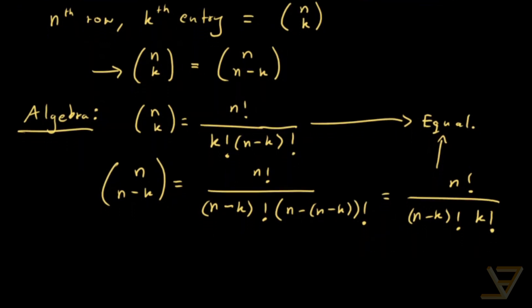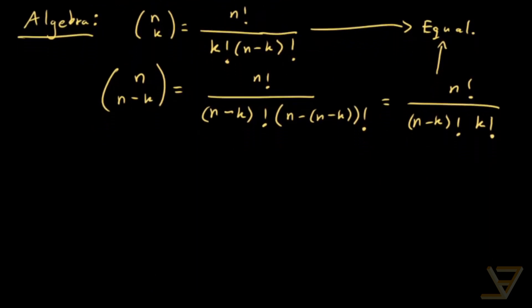But it's a little bit devoid of insight. We'd like to understand the meaning of it. If we can find a combinatorial proof, that'd be better. So let's write out the identity again. We have n choose k is equal to n choose n minus k.